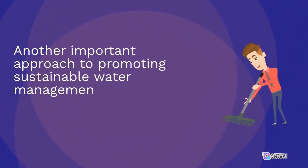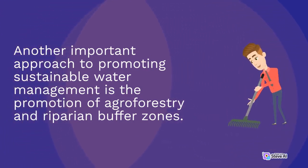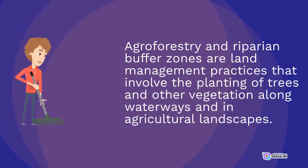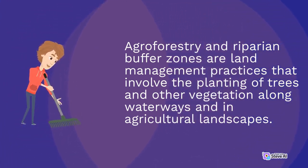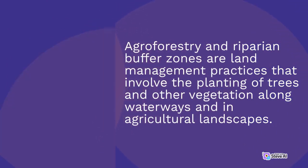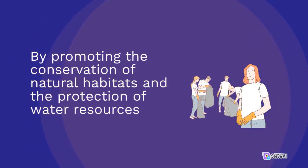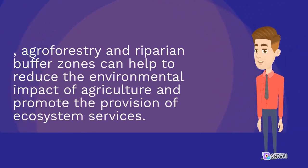Another important approach to promoting sustainable water management is the promotion of agroforestry and riparian buffer zones. Agroforestry and riparian buffer zones are land management practices that involve the planting of trees and other vegetation along waterways and in agricultural landscapes. By promoting the conservation of natural habitats and the protection of water resources, agroforestry and riparian buffer zones can help to reduce the environmental impact of agriculture and promote the provision of ecosystem services.